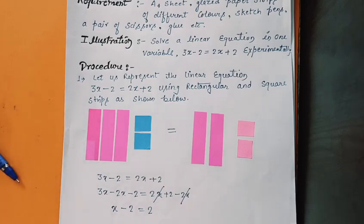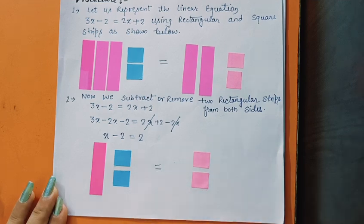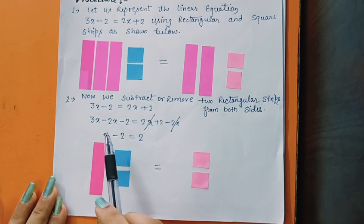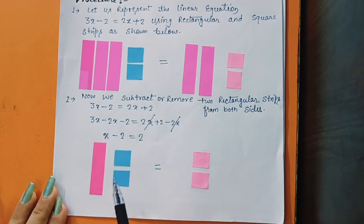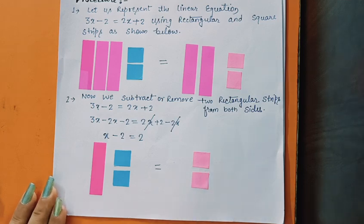In second step, the equation becomes this. Subtract 2x on both sides. So this x, the rectangular piece represents this x, 2 negative blue color and 2 positive. So 1 positive and 1 negative square paper strip collectively represent 0.